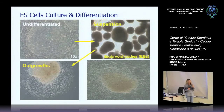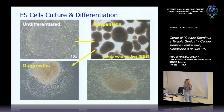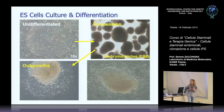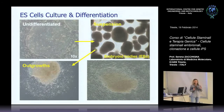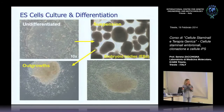Esistono dei geni, chiamati geni omeotici, che guidano le modalità di differenziamento in senso spaziale. Non è così scontato che da quella masserella di cellule si formi sempre un organismo con una perfetta simmetria: ci sono dei geni che guidano il differenziamento in senso spazio-temporale. Tutto questo viene a mancare negli Embryoid Bodies, per cui le cellule tendono a differenziarsi, ma lo fanno in maniera più caotica.